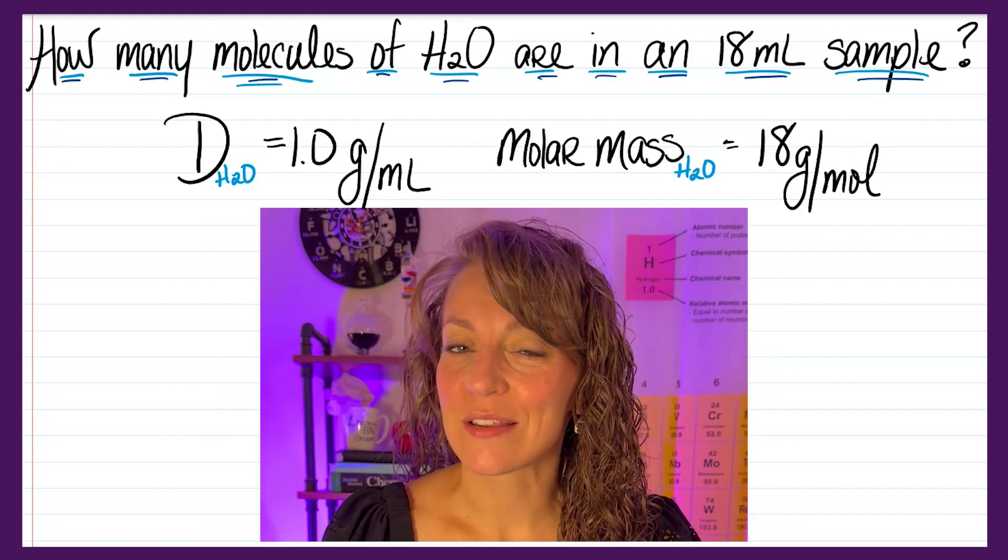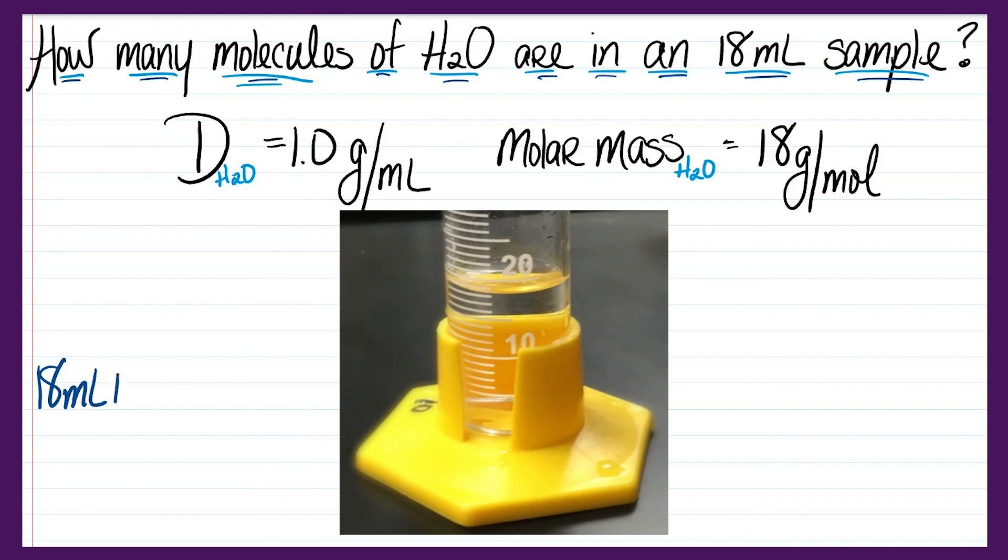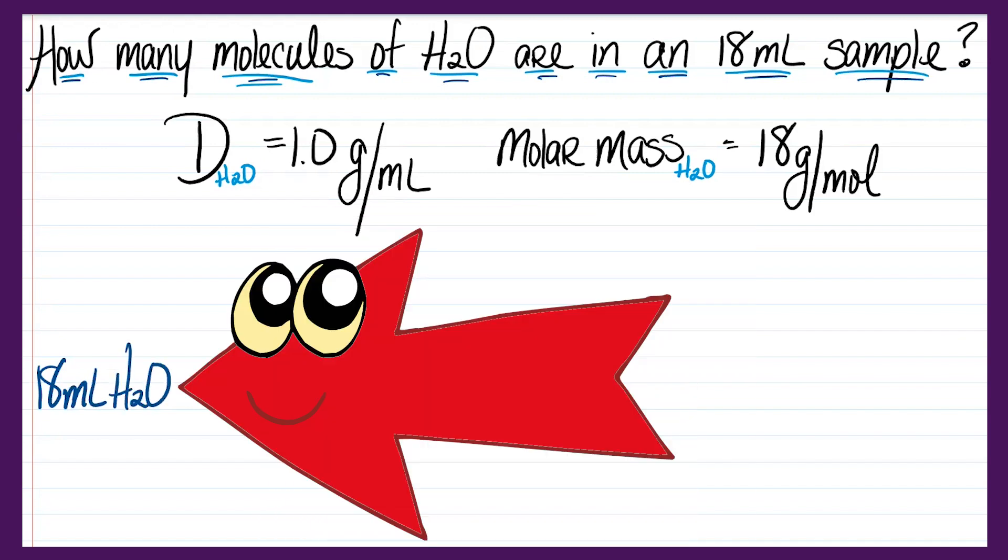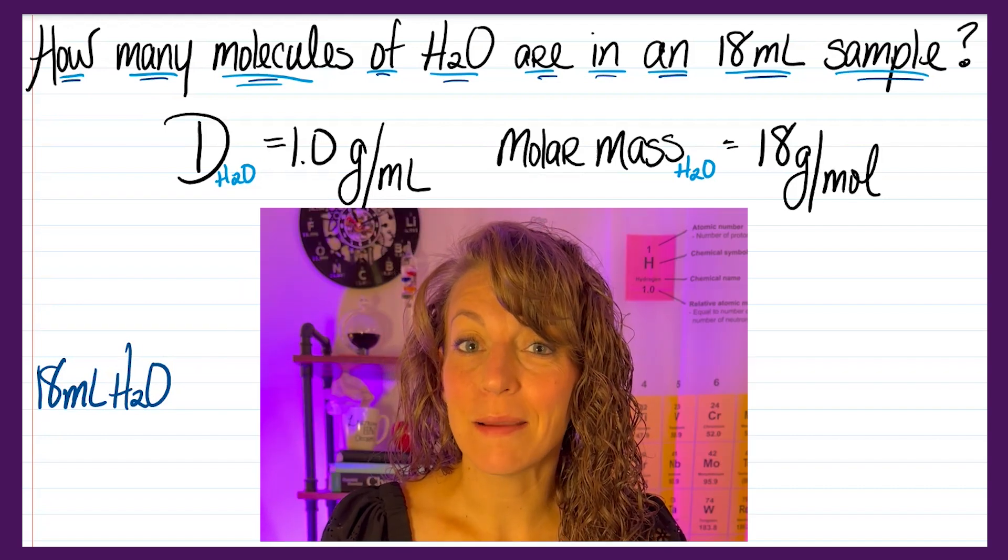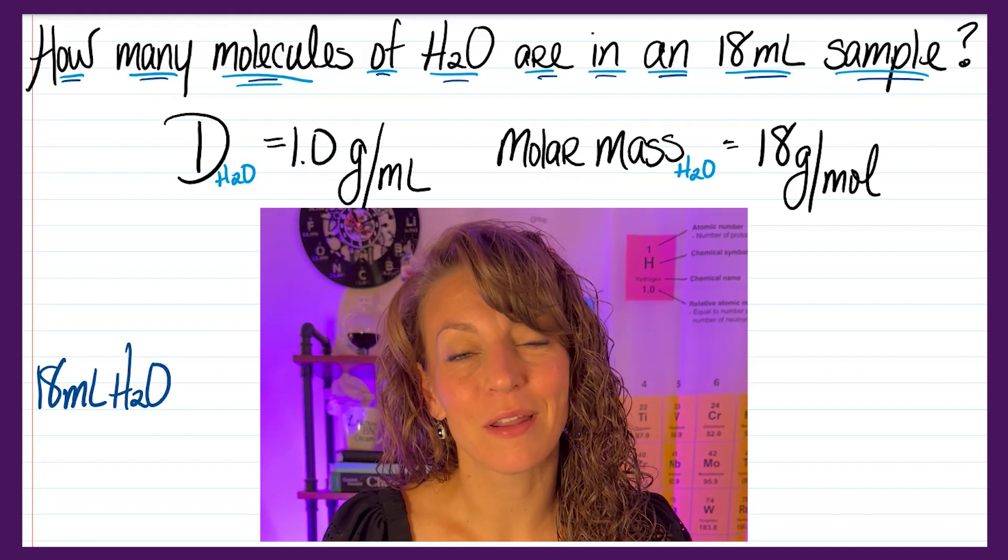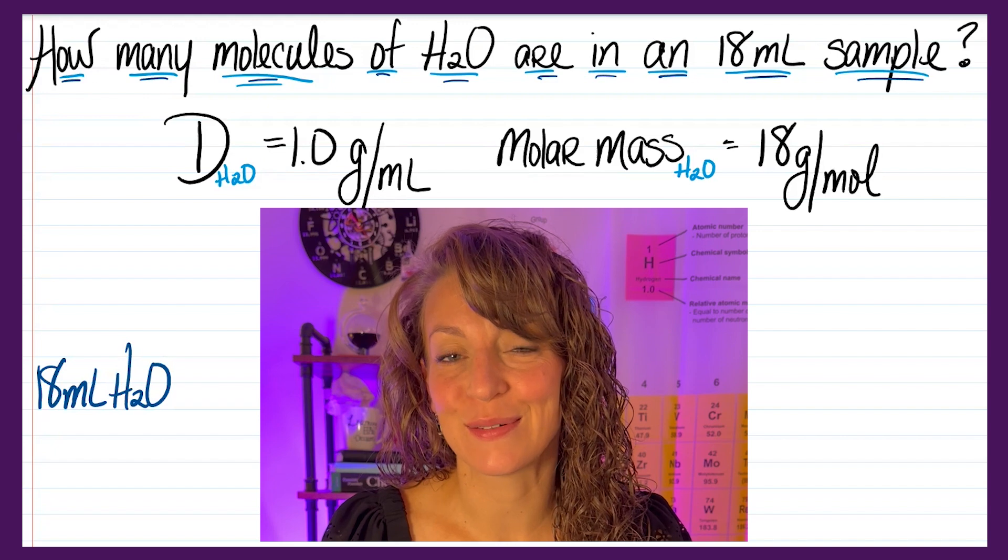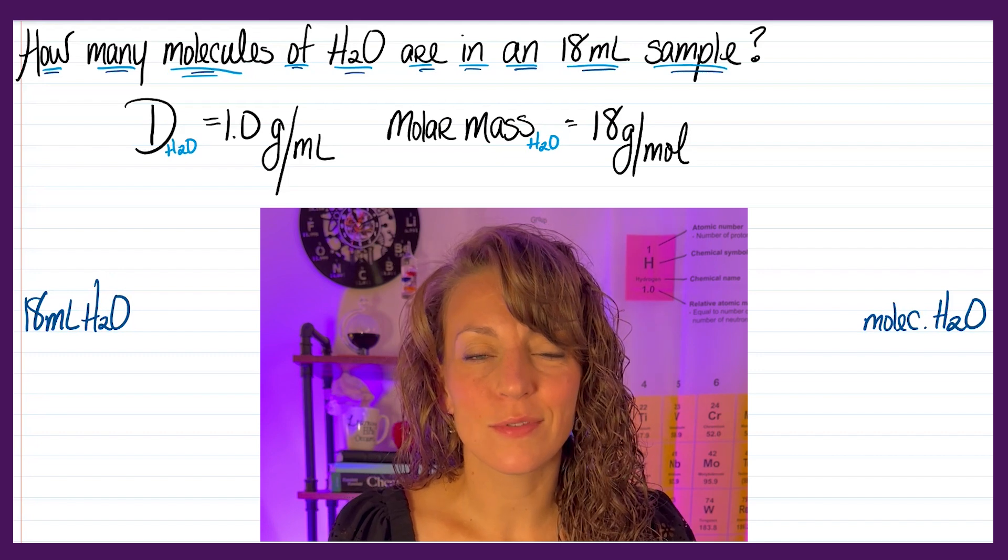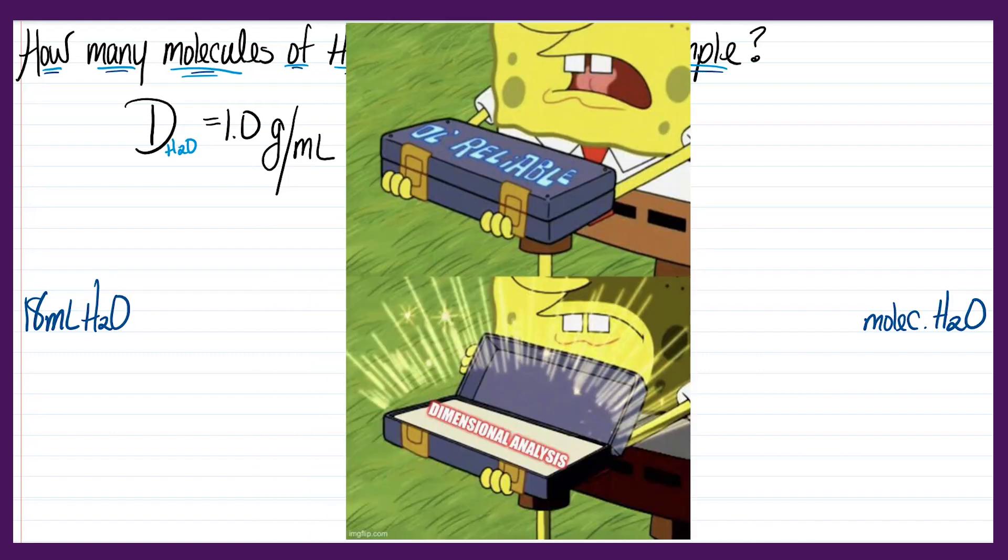So let's try it out. We're going to start with the 18 milliliters of water. I'm going to write it to the left side of my paper. And then to remind myself what unit I'm looking for, I'm going to write molecules of H2O on the right side. And then I'm going to use dimensional analysis to cancel my units.